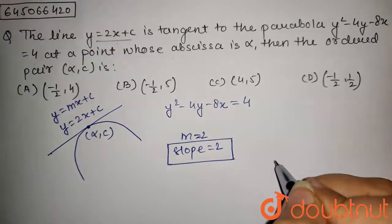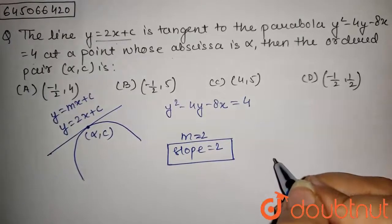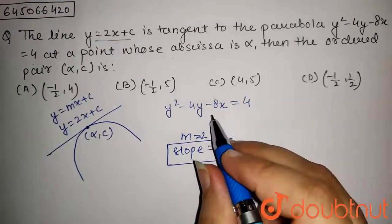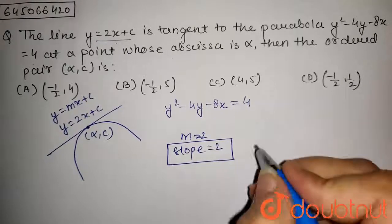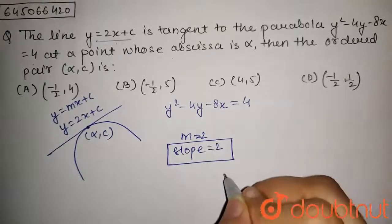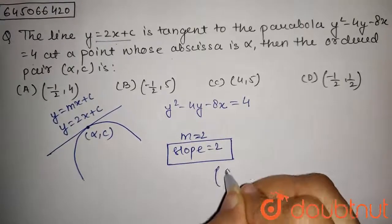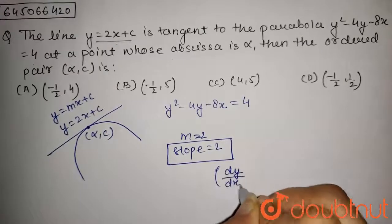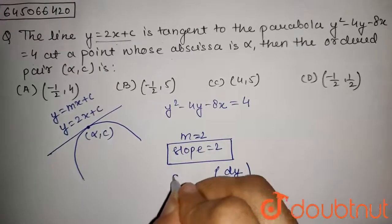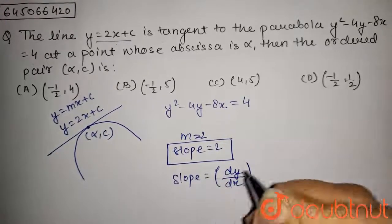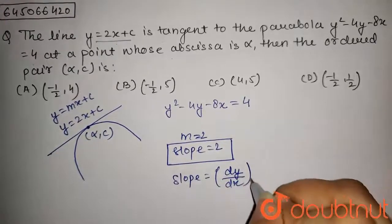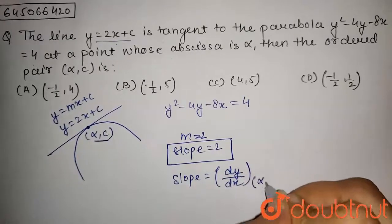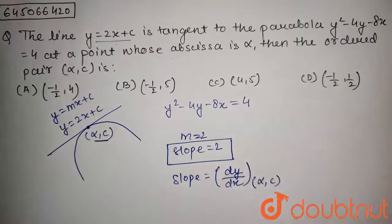We know that the slope of the tangent to the curve can be found by dy/dx. So this is the slope dy/dx, and we have to find the slope at this point (alpha, c).